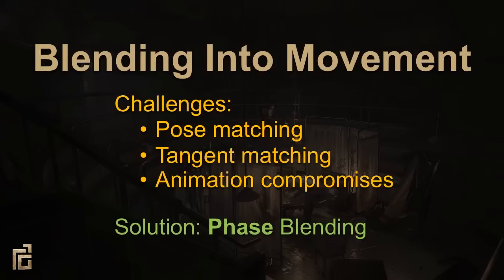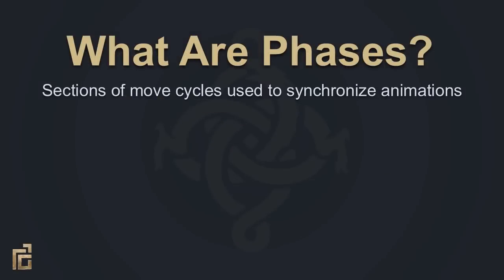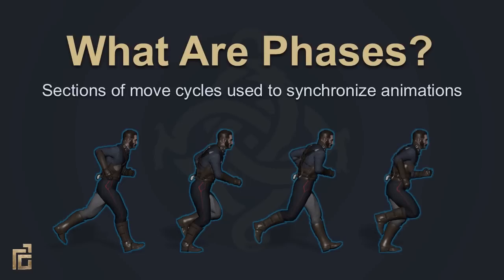The solution to all of these issues is phase blending. So what are phases? They're designated sections of move cycles which are used to synchronize animations, regardless of move speed, animation timing, direction of movement, or number of cycles. Animators tag each animation, identifying which phases fall on which frames. The engine then reads these tags and blends animations together using a phase clock, which progressively averages the phases of all the animations playing.